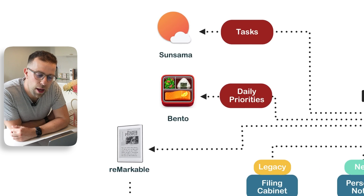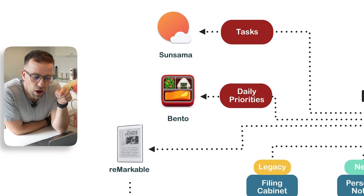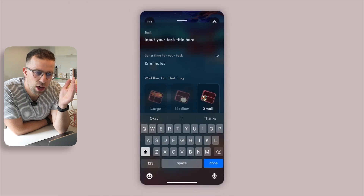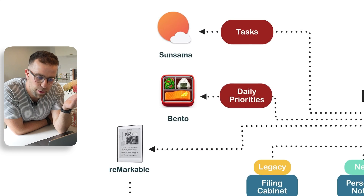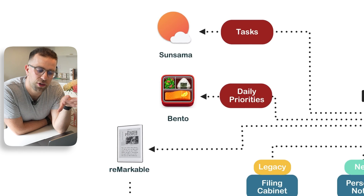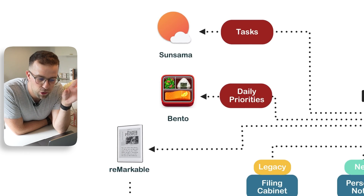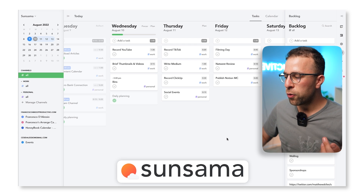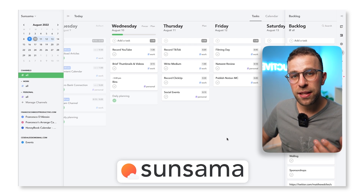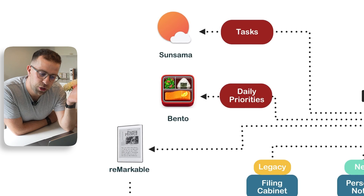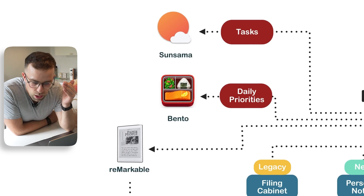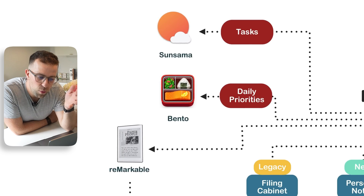So here we have Francesco's second brain. Starting on the left-hand side with tasks: it says here I use Sunsama for tasks and Bento for tasks too. I do use Bento but very occasionally — I actually embed the Bento methodology in Sunsama. So in terms of tasks, it's really primarily Sunsama that I spend most of my time in. We've got a video on the channel about Sunsama coming soon, but check out the previous one on how I use it.